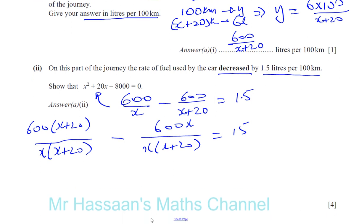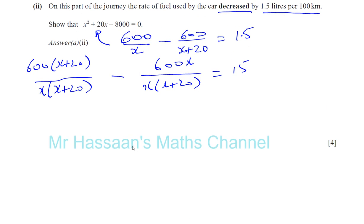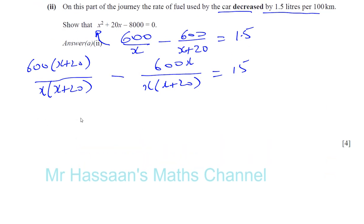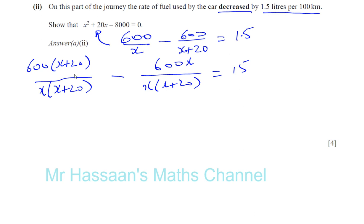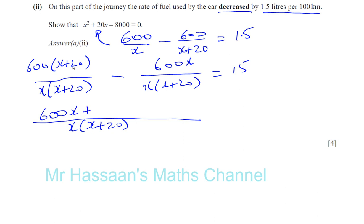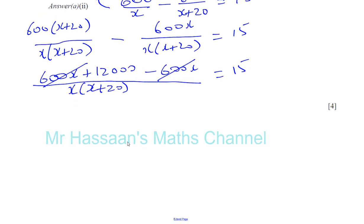Under the common denominator of X times (X plus 20), I expand the numerator: 600X plus 12,000 minus 600X, all over X(X plus 20), equals 1.5. The 600X terms cancel, leaving 12,000 over X(X plus 20) equals 1.5. Cross-multiplying both sides gives 1.5 times X times (X plus 20) on the right.